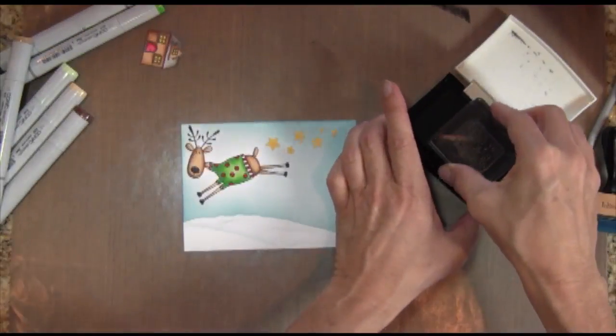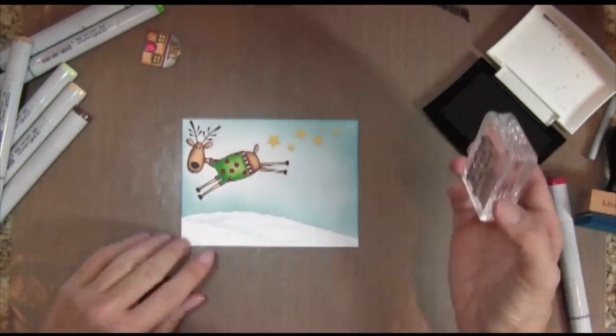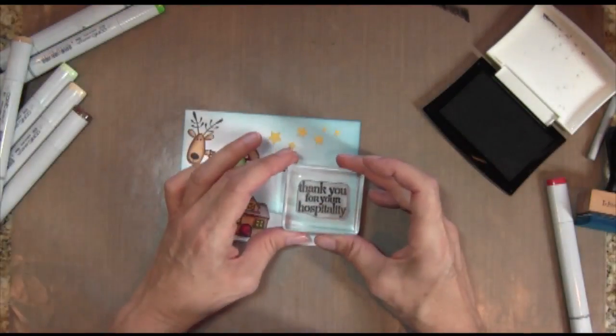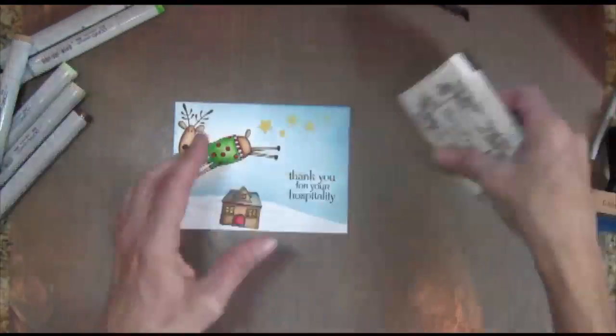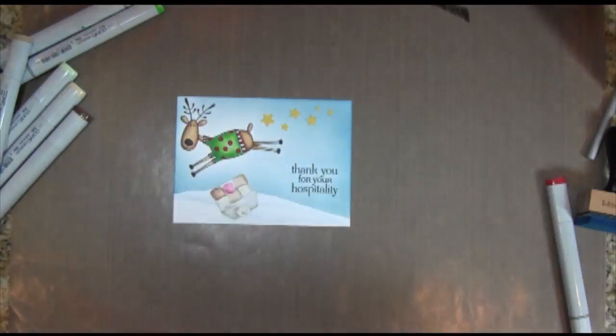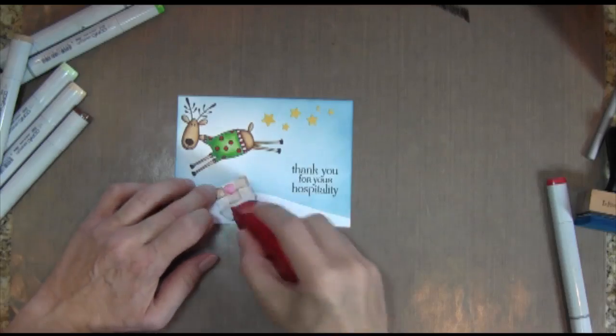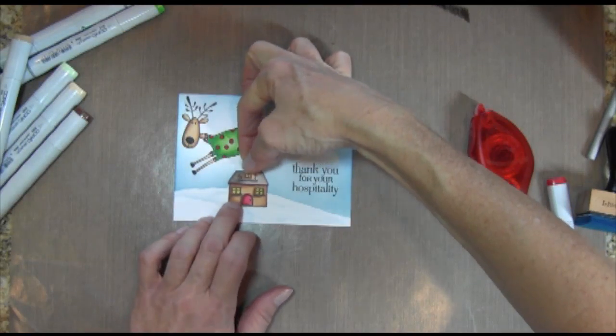This is VersaFine black ink, and I find that this ink works great on clear stamps. You get a really crisp, clear image. So I'm stamping my sentiment with that, and I'm just going to adhere my house now.